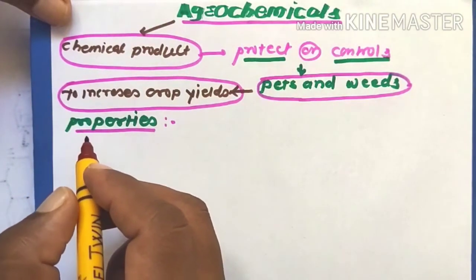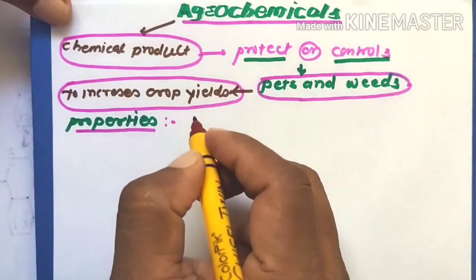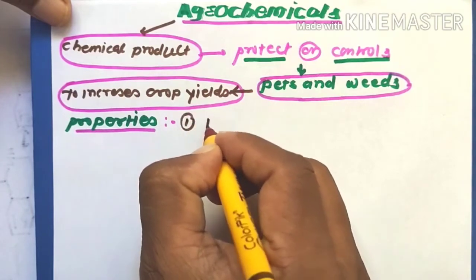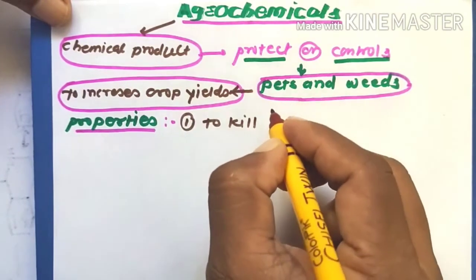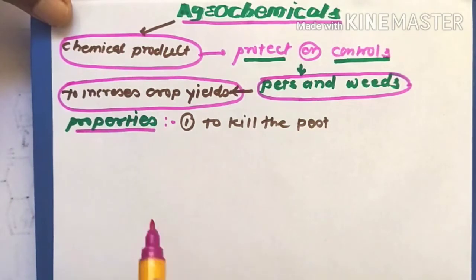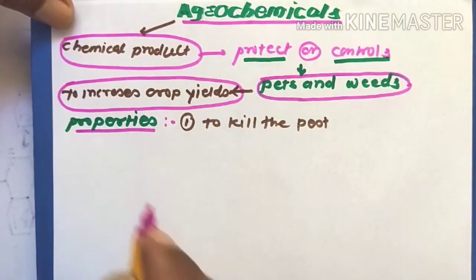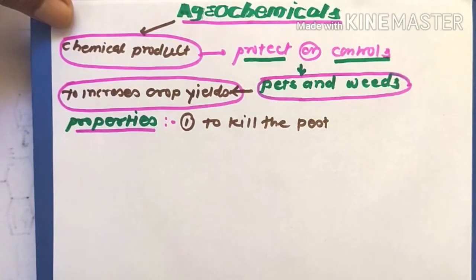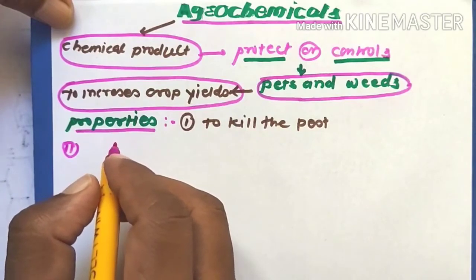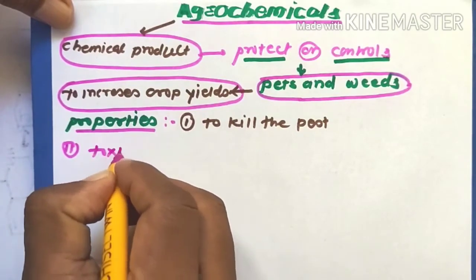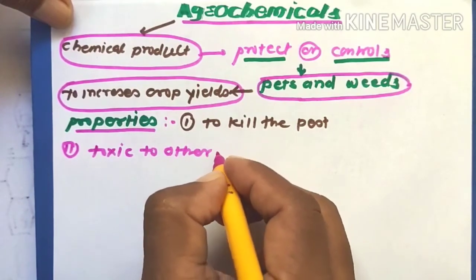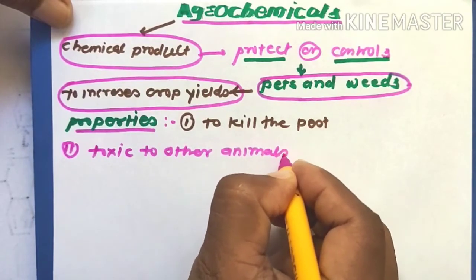The ideal properties of pesticides: the first one is it should be broad spectrum, to kill the pest. These are the first ideal properties of any agrochemical. The second one is they should not be toxic to other animals or plants.